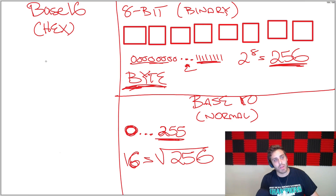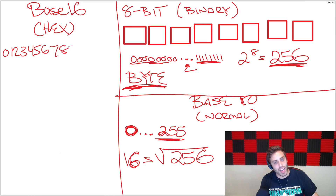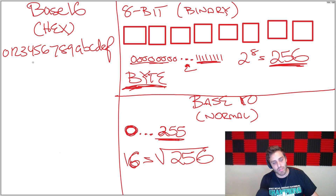In base 16, you not only have 0, 1, 2, 3, 4, 5, 6, 7, 8, 9, but you also have A, B, C, D, E, F. So there are 16 different digits that you can use.